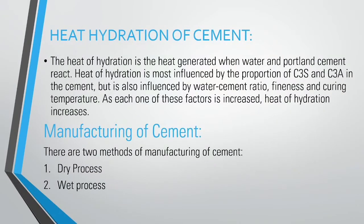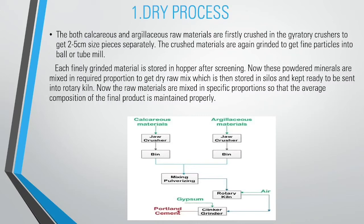Manufacturing of Cement. There are two methods: dry process and wet process. In the dry process, both calcareous and argillaceous raw materials are first crushed in a jaw crusher to get 2–5 cm sized pieces separately. The crushed materials are then ground into fine particles in a ball or tube mill. Each finely ground material is stored in a hopper. These powdered materials are mixed in the correct proportion to get a dry raw mix, stored in silos and kept ready to be sent into the rotary kiln.